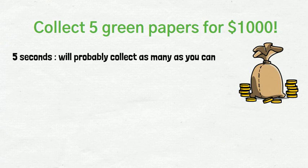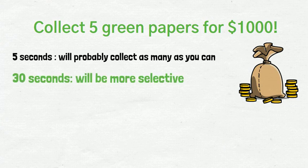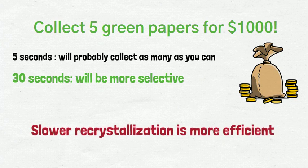Now, if you are given more time, say 30 seconds, then you can be more selective and look for green papers only. Recrystallization is the same in the sense that the crystals are grabbing solutes from the solution. If too rapid, any solute will be grabbed right away and will crystallize. If slow, the crystallization will be more selective and the product has increased purity.